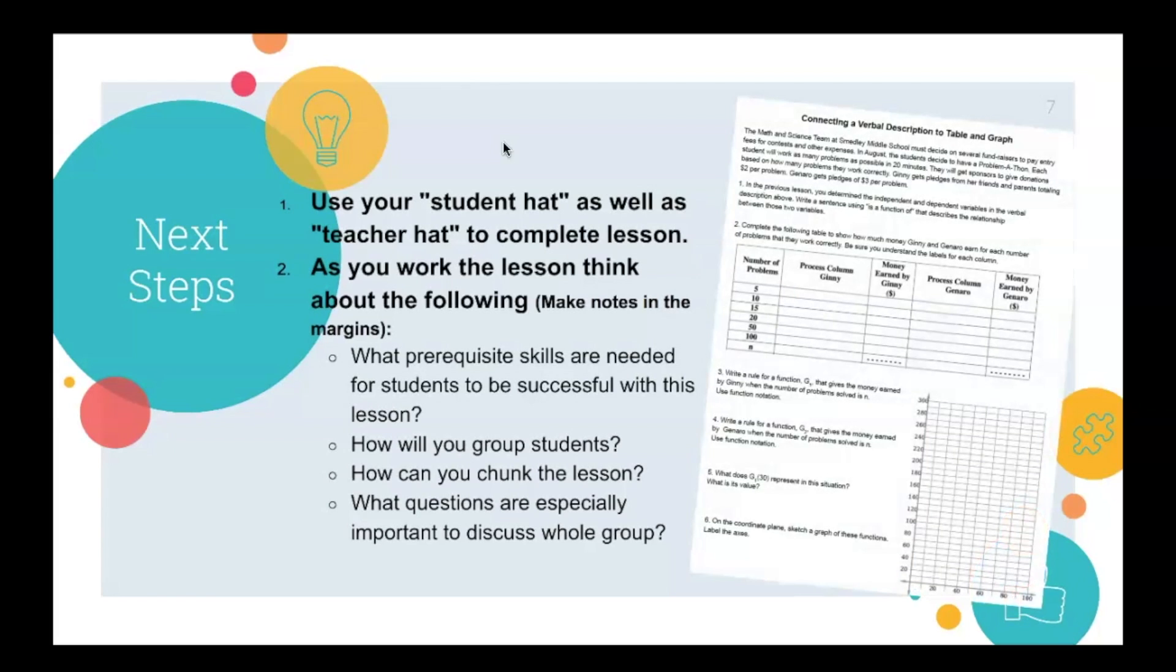So in this lesson, questions to think about would be especially three, four and five because they are using that function notation. It is important for students to understand how to both write an equation using function notation and interpret a statement when it is written in function notation. For example, here on question five, G of one would represent Jenny and this value inside the parentheses stands for a specific number of problems. So what they are asking is what is Jenny's earnings for 30 problems?